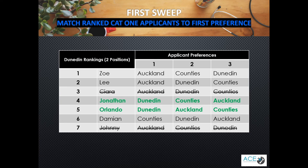In reality, these applicants would simply be removed from the DHB list. Once again, the algorithm will look at Dunedin's ranked applicants from top to bottom and will match applicants who have ranked them first in the sweep. Zoe and Lee have not ranked Dunedin first, so the algorithm will flag them and keep them on the list for the next sweep. Kira has already been matched, so the algorithm will skip her and move to Jonathan. Jonathan has ranked Dunedin first, so he will be matched to Dunedin. Orlando has also ranked Dunedin first, so he is matched here also.